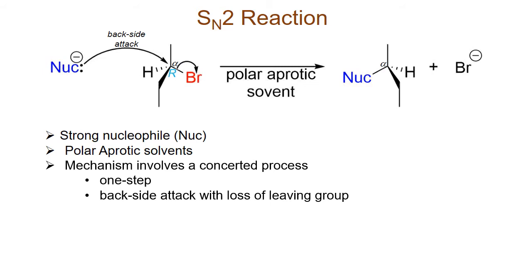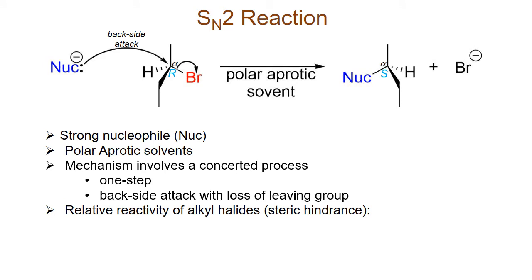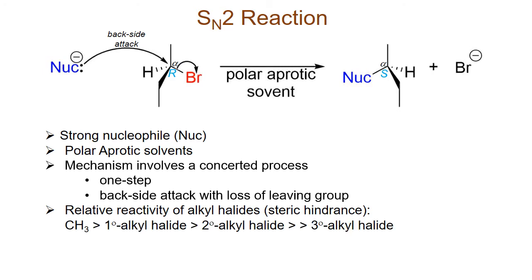In a case where the alkyl halide is chiral at the alpha carbon, the reaction also proceeds with an inversion of configuration. As far as the reactivity of alkyl halides is concerned, it is determined by steric hindrance at the alpha carbon. The most reactive alkyl halide is a methyl halide which exhibits the least amount of steric hindrance, and reactivity decreases in the order of methyl, primary, then secondary alkyl halides. Tertiary alkyl halides, which exhibit the most steric hindrance at the alpha carbon, do not participate in this reaction.